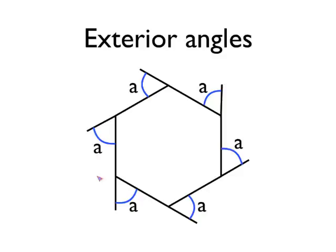And in a hexagon, there are six of them. If we know that all of those angles add up to 360 degrees, there are six of them, and they're all the same size, we can really easily calculate what those exterior angles must be by just doing 360 divided by six.